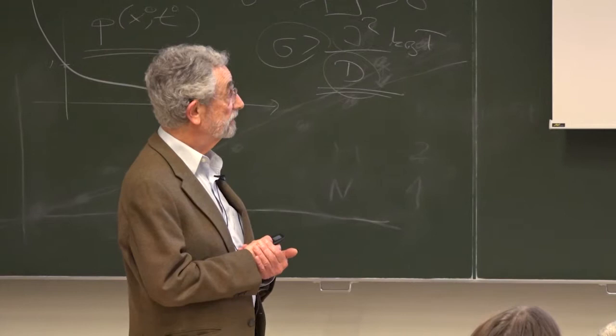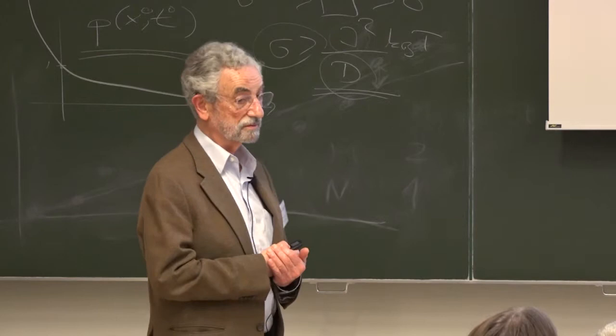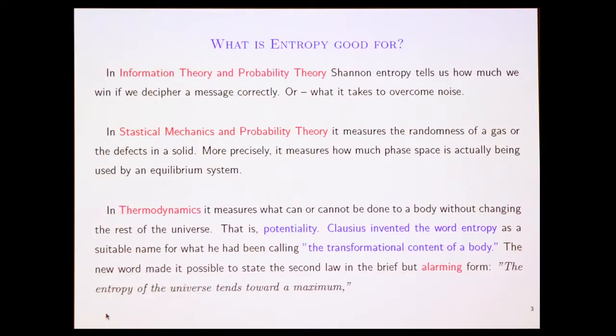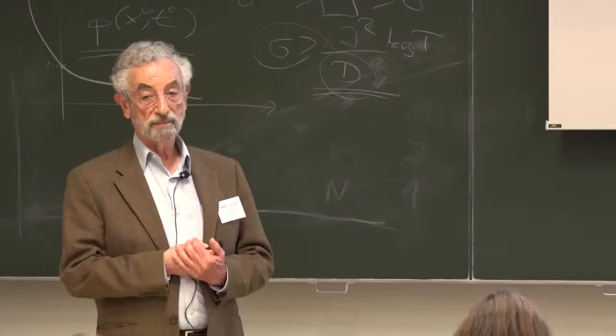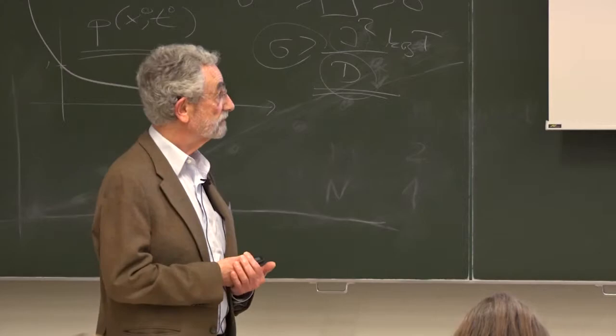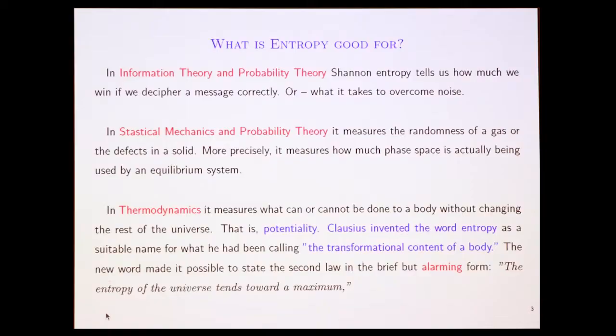In thermodynamics, however, it measures what can or cannot be done to a body without changing the rest of the universe. That's what it measures. That is, it measures potentiality. Clausius invented the word entropy as a suitable name for what he had been calling the transformational content of a body.